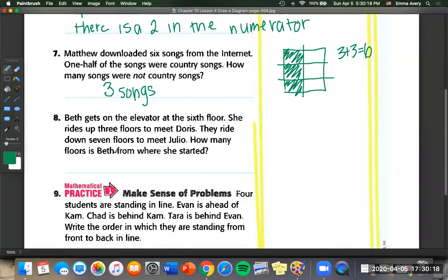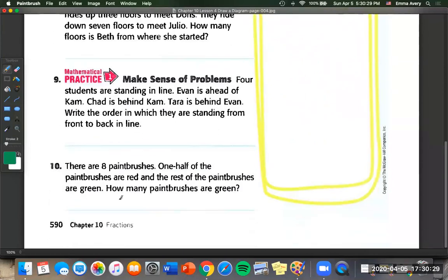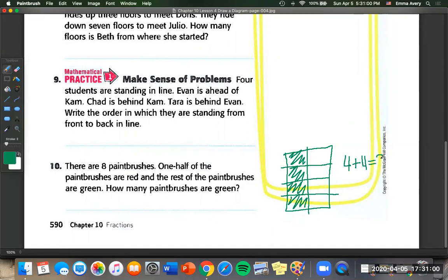We're going to skip number eight because this one's a little bit more complicated. We'd have to draw a pretty complicated diagram for this one. So we're going to go on to number ten. So there are eight paint brushes. One half of the paint brushes are red. And the rest of the paint brushes are green. How many of the paint brushes are green? So we're going to do the same thing we just did. This time with eight pieces. Let's draw eight. And one half are red. One, two, three, four. Four, because we know four plus four equals eight. And that leaves this other half are green. So four are green.